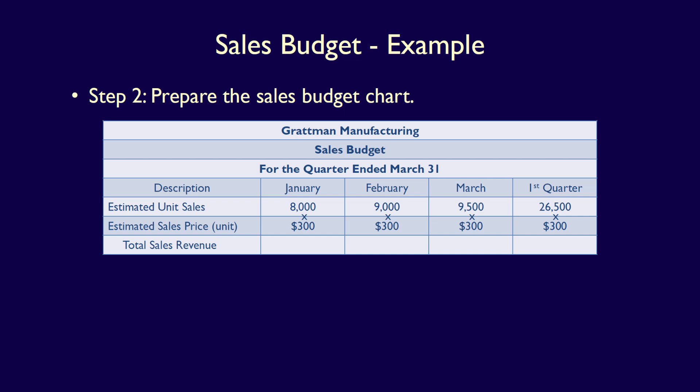We now apply the formula: estimated unit sales multiplied by the estimated sales price per unit. For January, 8,000 units multiplied by $300 per unit is equal to $2,400,000 in total sales revenue. For February, 9,000 units multiplied by $300 per unit is equal to $2,700,000. March: 9,500 units multiplied by $300 per unit is equal to $2,850,000. For the first quarter, 26,500 units multiplied by $300 per unit is equal to $7,950,000. Note that we could also calculate the first quarter column as $2,400,000 plus $2,700,000 plus $2,850,000, also equal to $7,950,000. Regardless of which way you do it, the total must be the same.